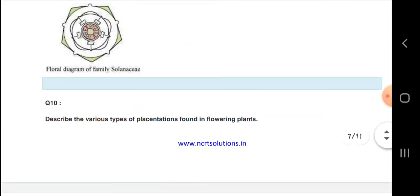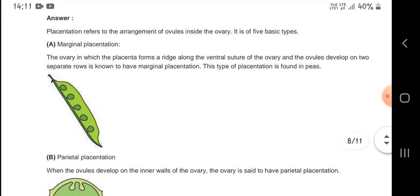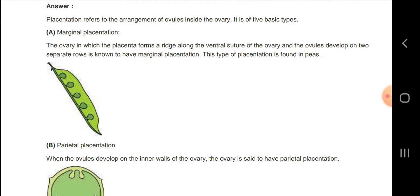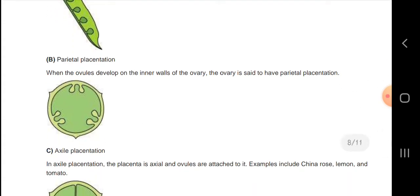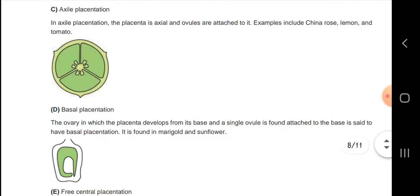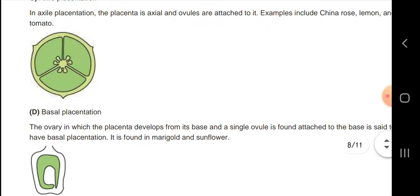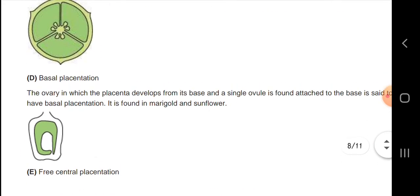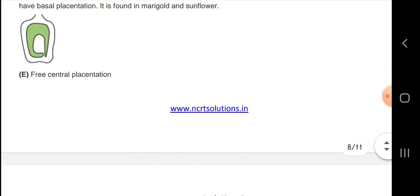Types of placentation found in flowering plants. The first type is marginal placentation, where the ovary has the placenta forming a ridge along the ventral suture of the ovary and the ovules develop on two separate rows. Parietal placentation is when the ovules develop on the inner walls of the ovary. Basal placentation is when the placenta develops from the base of the ovary and a single ovule is found attached to the base.